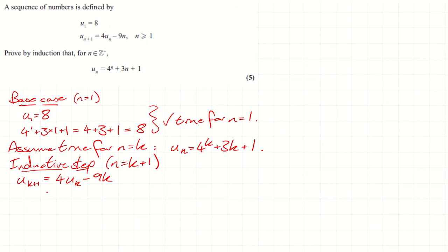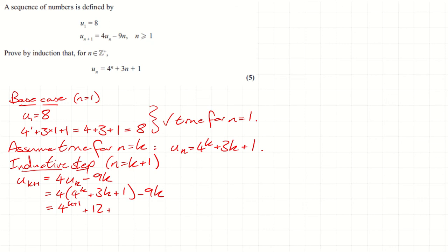But now we can use our assumption because we can plug it into the recurrence relation. So that's four lots of uₖ — substituting our assumption — minus nine k. Let's simplify this up. Straight away we've got four times four to the k, giving four to the k plus one, plus twelve k plus four, minus nine k.